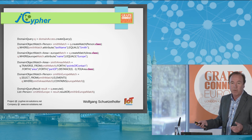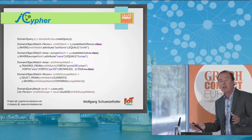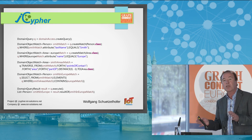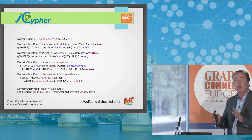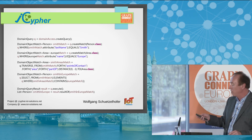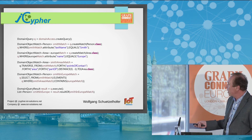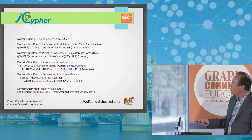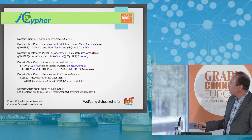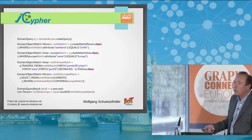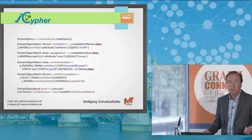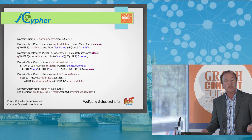We select from all Smiths those elements where the previously collected areas contain Europe. That's again quite simple and only uses concepts of our business domain. We execute the query and retrieve a list of persons with last name Smith who have addresses in Europe.